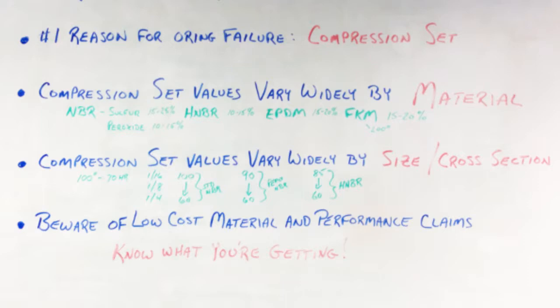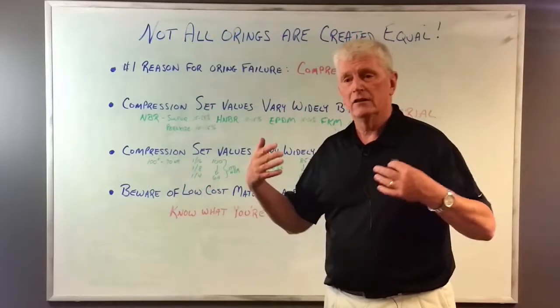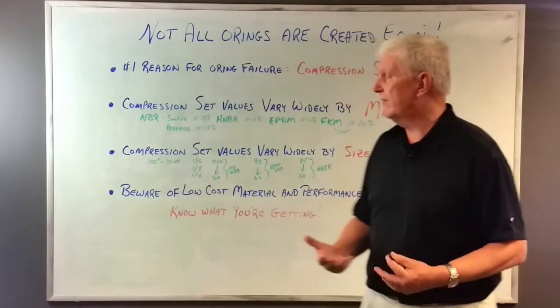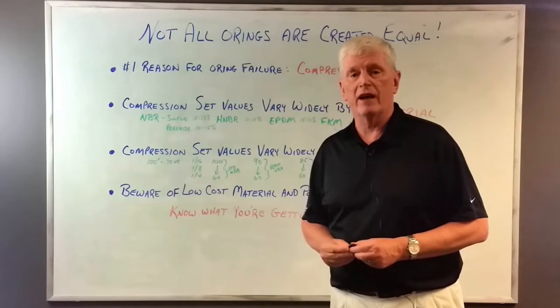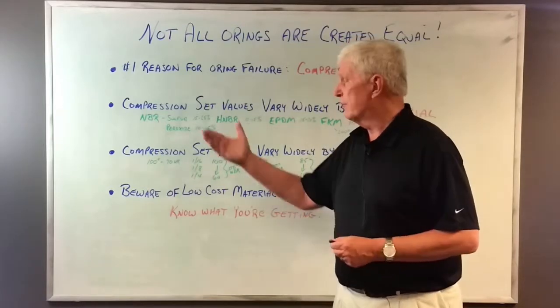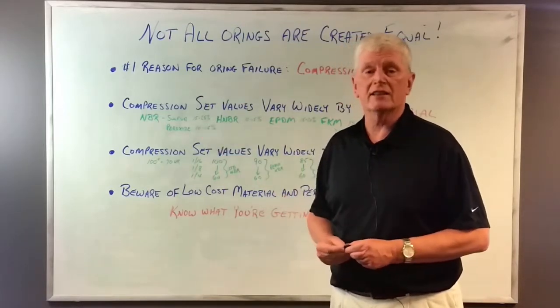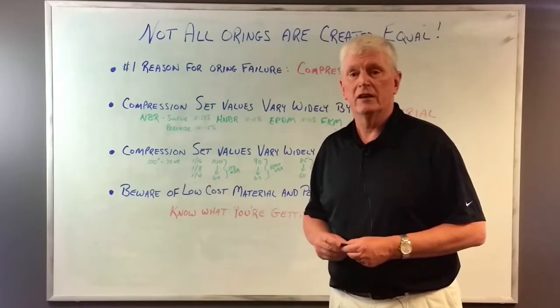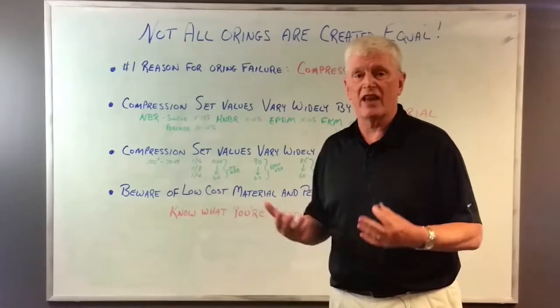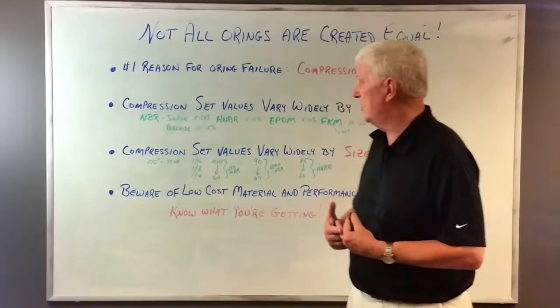A peroxide cure material is a step up from the sulfur cure, and one of the reasons for that is what you can see in the illustration here is the compression set. Under standard 100 degrees C testing for 70 hours, you can expect a good sulfur cure to still have 15 to 25 percent compression set. A peroxide cure material, you're going to reduce that to 10 to 15 percent.